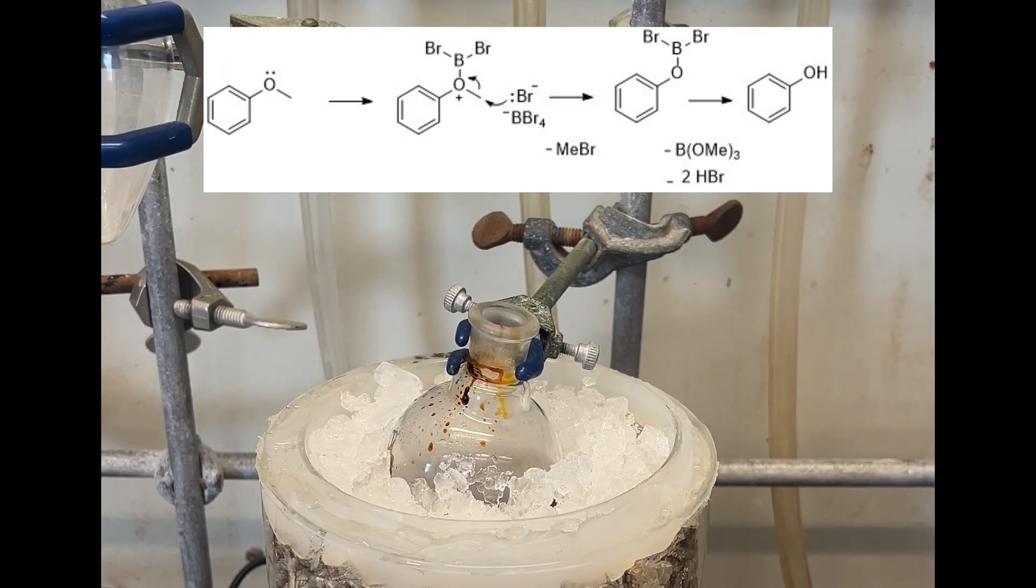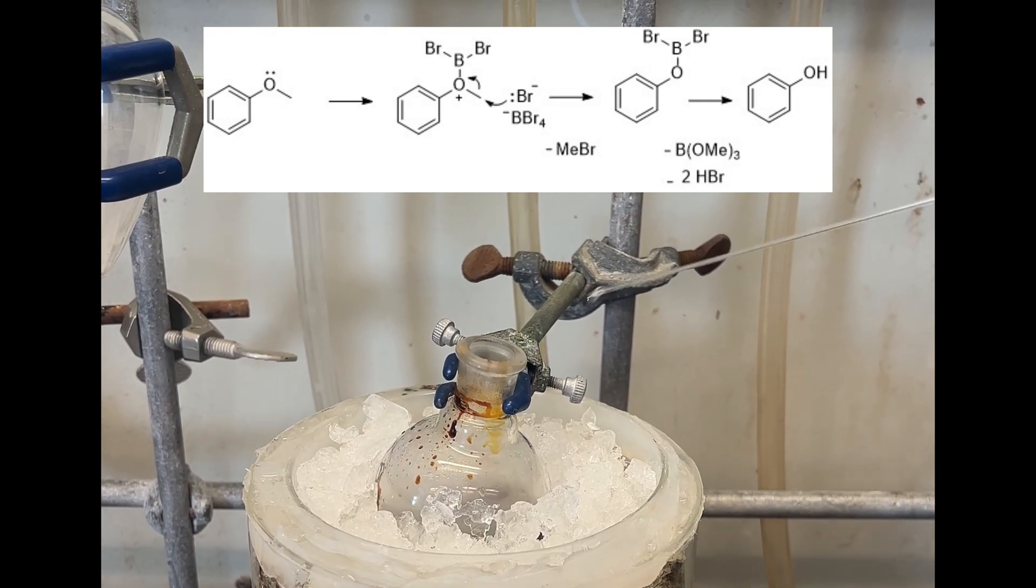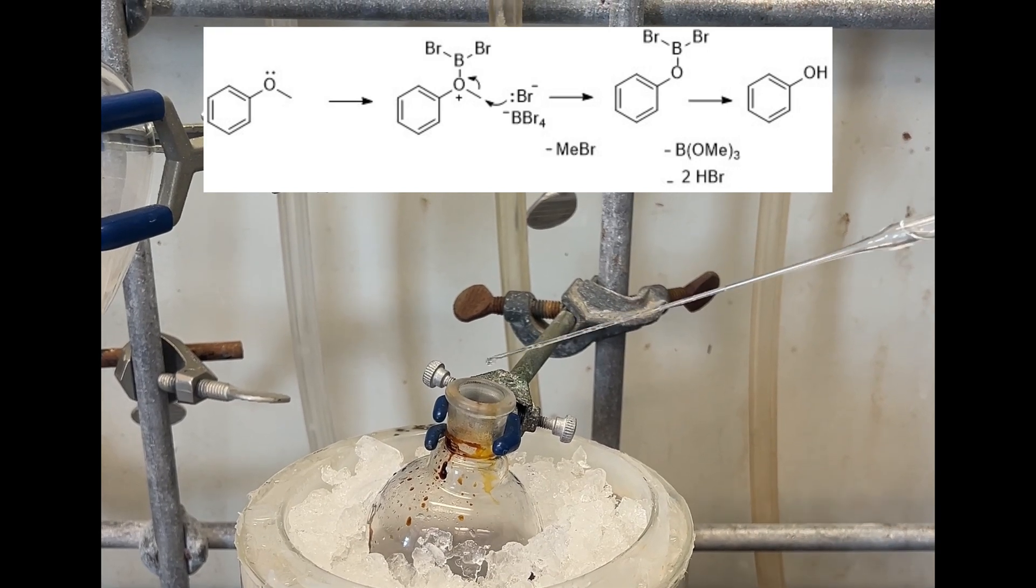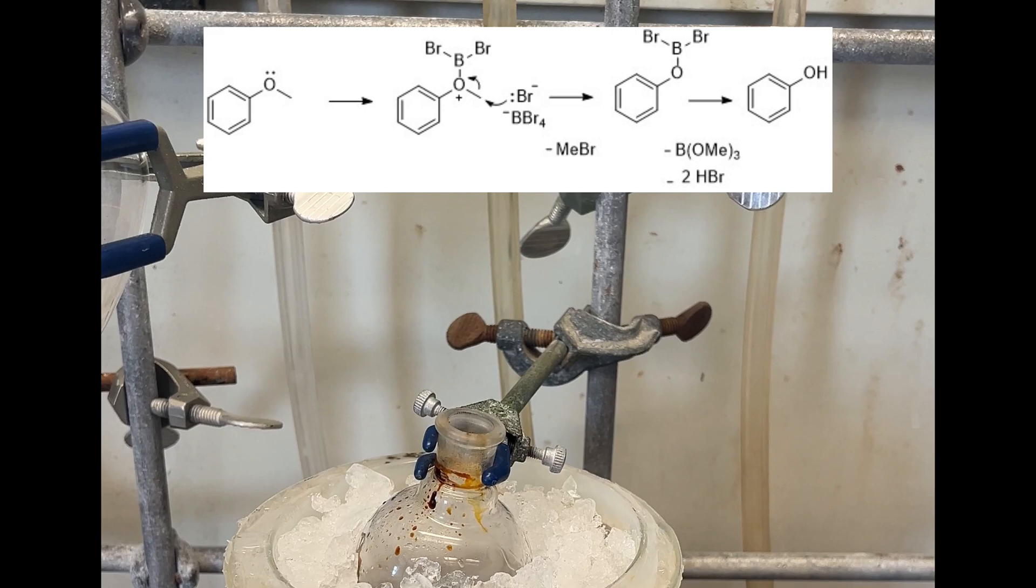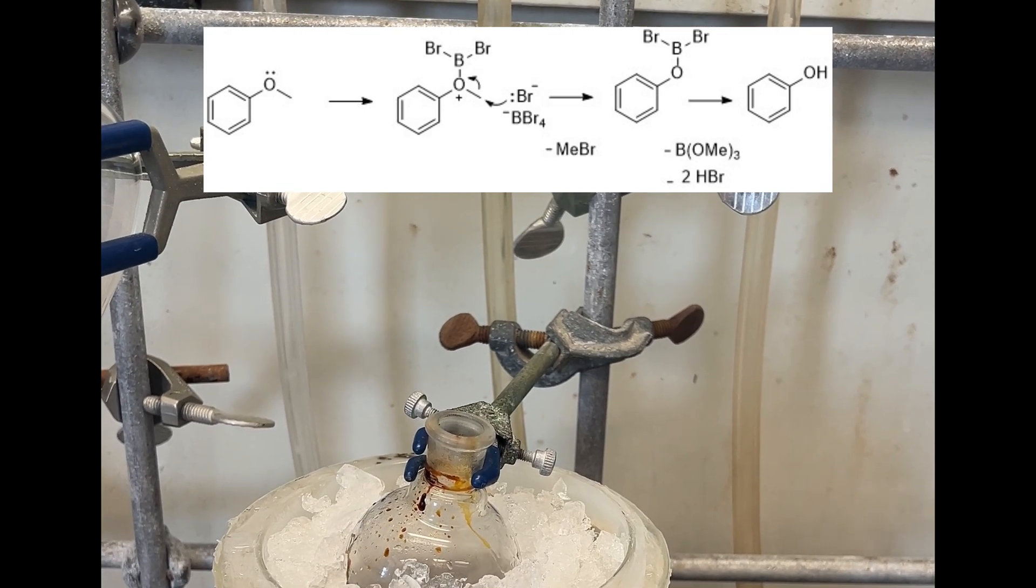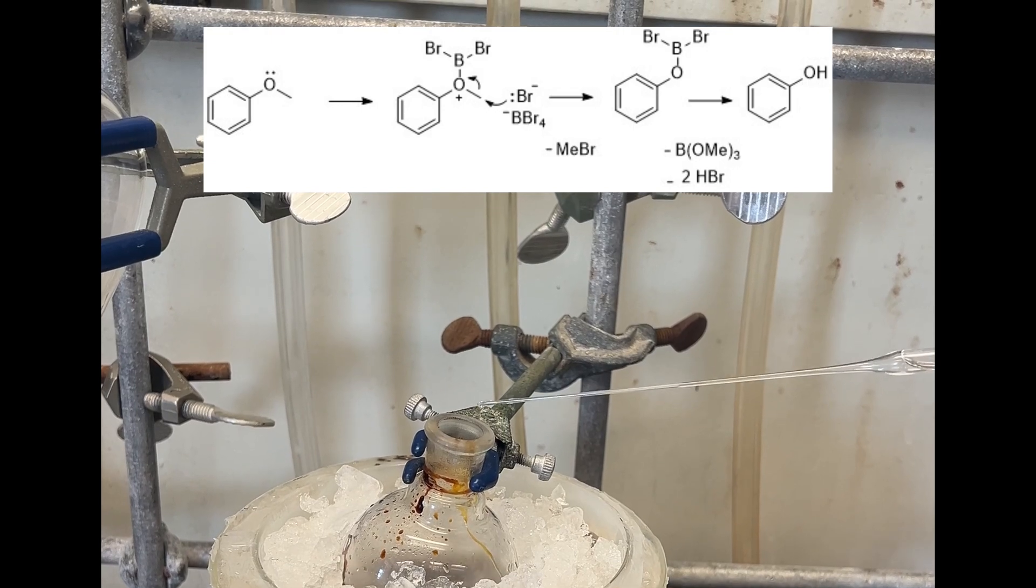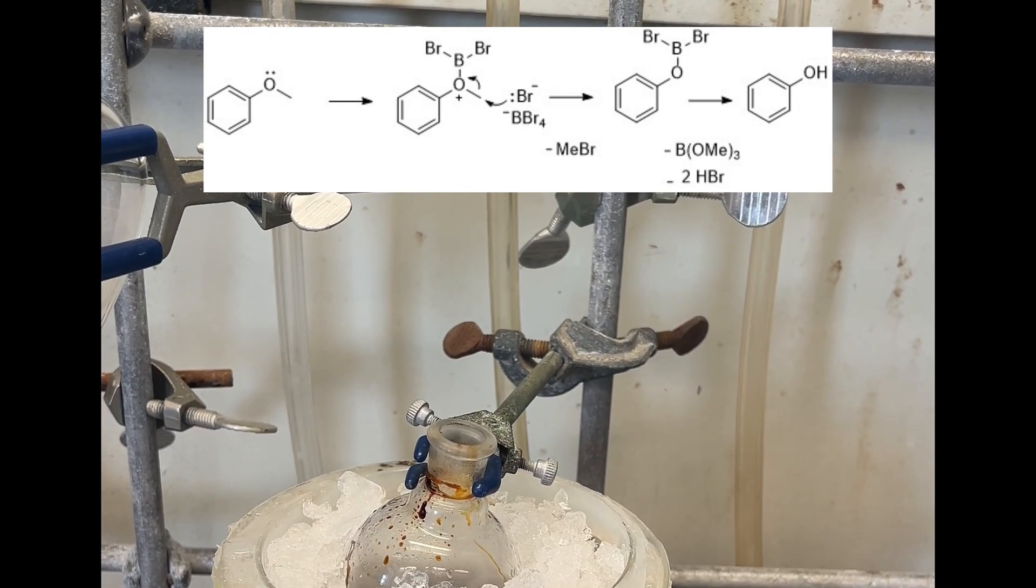This is the mechanism. BBR3 is a Lewis acid with an empty p orbital, which looks nice and juicy to the lone pair on the oxygen. Some source of bromide is responsible for displacing the methyl group. Bromomethane is a side product, but it boils at four degrees Celsius, so it is gone upon workup with methanol. Upon the workup, you also form a volatile borate group.